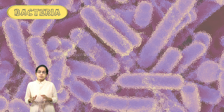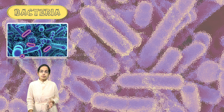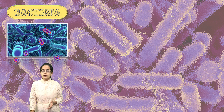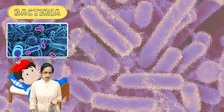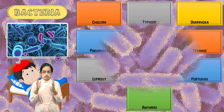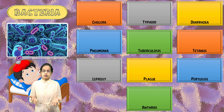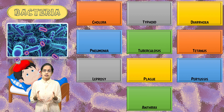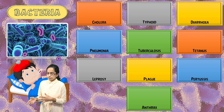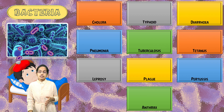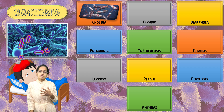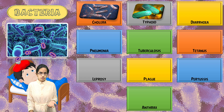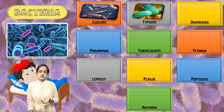Let's first talk about bacteria. Many of the diseases that we commonly hear about are caused by bacteria — for example, cholera, typhoid, diarrhea, pneumonia, tuberculosis, tetanus, and plague. All of these can be either vector-borne, water-borne, or air-borne. There are various ways of transmission through which they are spread.